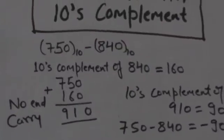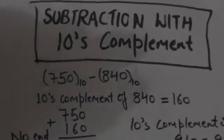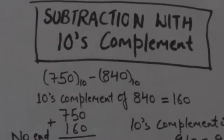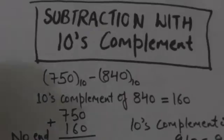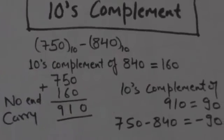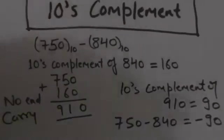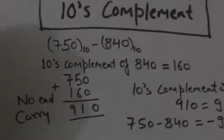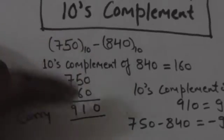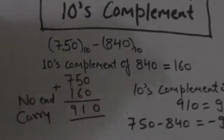Now suppose there are two decimal numbers: 750 and 840, and we have to subtract 840 from 750. First we will find the ten's complement of 840, which is 160. Then we will add 160 to 750. When we add these two numbers we will get 910.